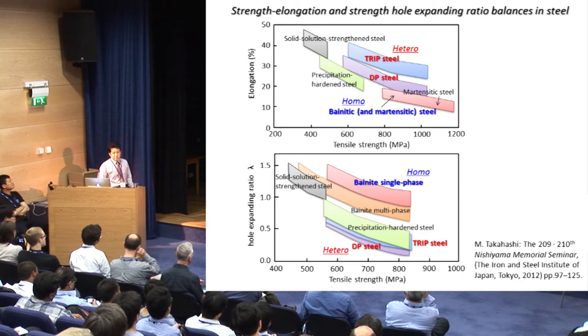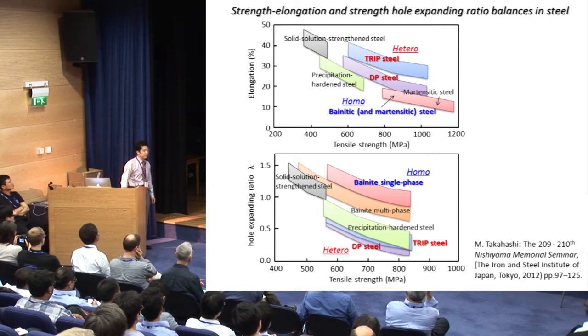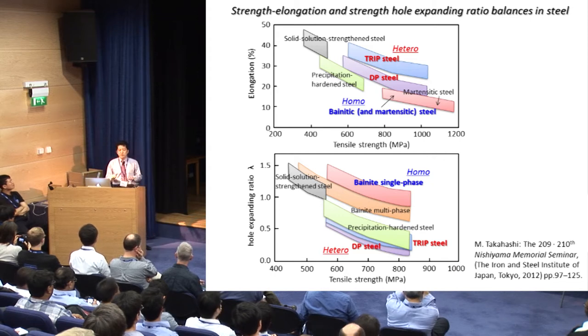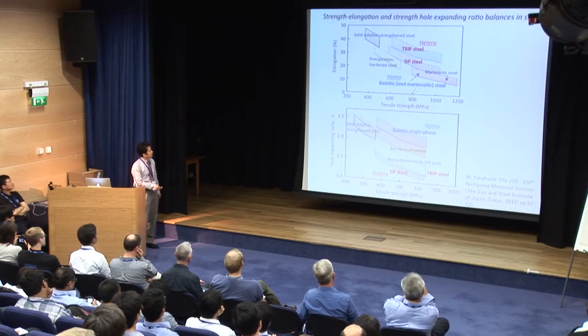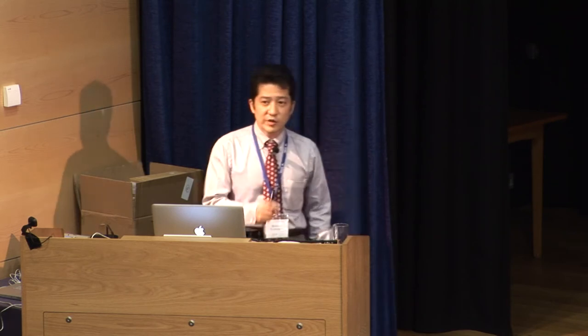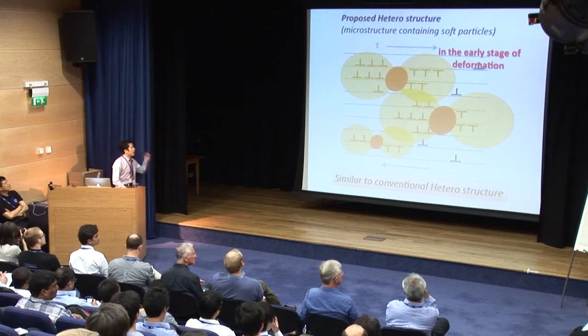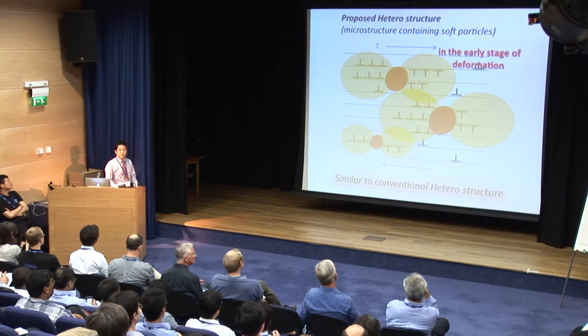This result indicates that elongation and hole-expanding ratio are in a trade-off relationship, just like strength and elongation. But we want to improve both properties at the same time. It is difficult, but I think it is realizable by using fine, soft particles such as copper precipitates.